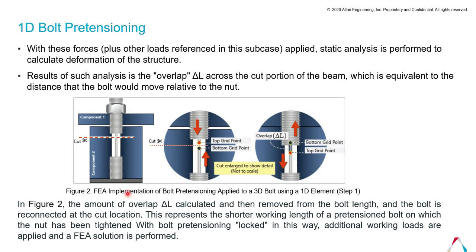With this, a static analysis is performed to calculate the deformation of the structure. The result of such analysis is the overlap delta L across the cut portion of the beam, which is equivalent to the distance the bolt would move. As shown in the figure, the bolt is cut at the imaginary location to calculate delta L, then reconnected at the cut location. This represents the shortening of the working length of the pretension bolt on which the nut has been tightened.